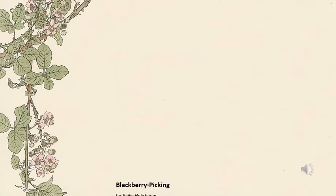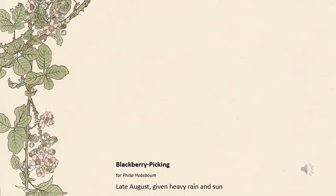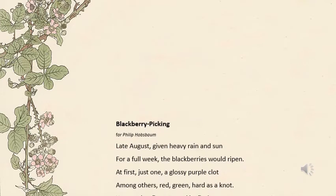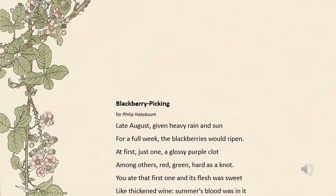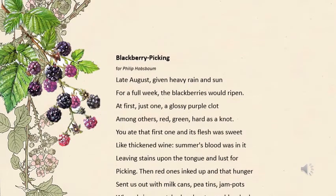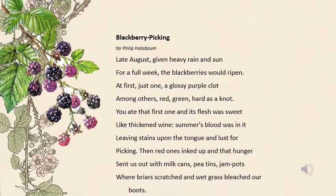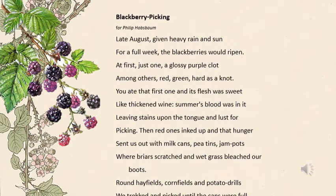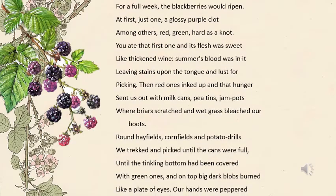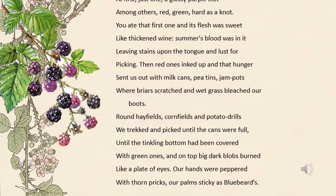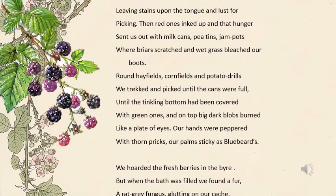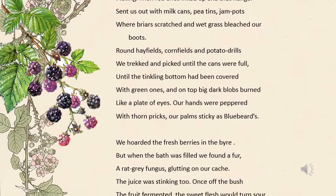Blackberry Picking, for Philip Hobsbawm. Late August, given heavy rain and sun for a full week, the blackberries would ripen. At first just one, a glossy purple clot, among others red, green, hard as a knot. You ate that first one, and its flesh was sweet like thickened wine. Summer's blood was in it, leaving stains upon the tongue and lust for picking. Then red ones inked up, and that hunger sent us out with milk cans, pea tins, jam pots, where briars scratched and wet grass bleached our boots. Round hayfields, cornfields and potato drills we trekked and picked until the cans were full, until the tinkling bottom had been covered with green ones, and on top big dark blobs burned like a plate of eyes. Our hands were peppered with thorn pricks, our palms sticky as Bluebeard's.